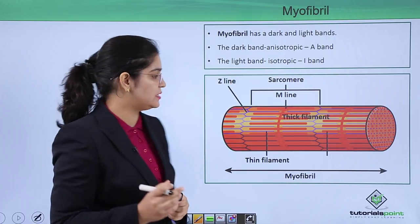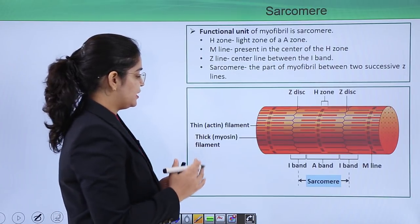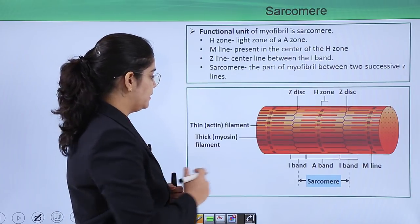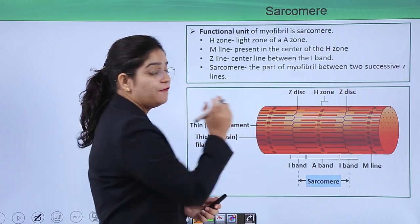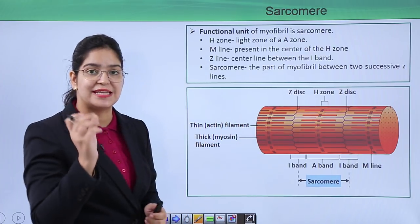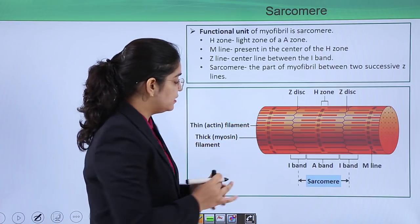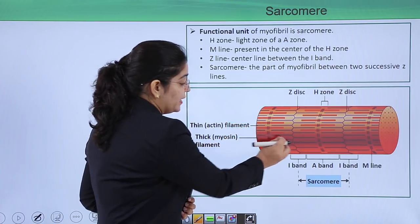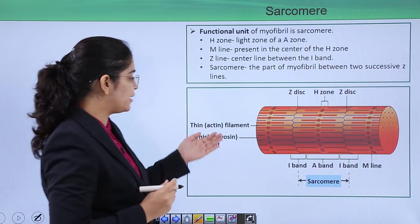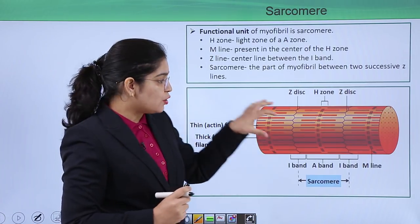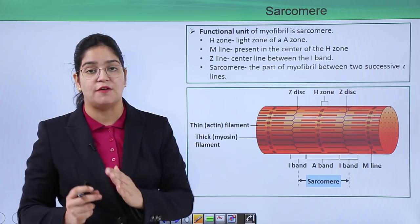Let's learn about the sarcomere in detail. In this picture, the blue lines — which we already know are thin filaments — are actually made up of actin protein. The red thick filament is made up of myosin protein.